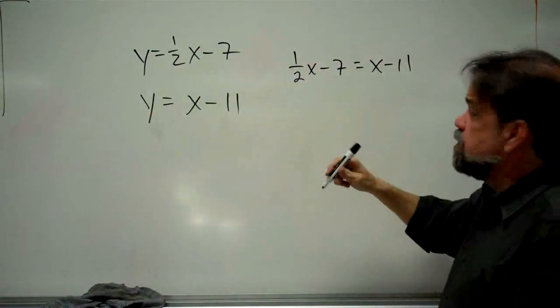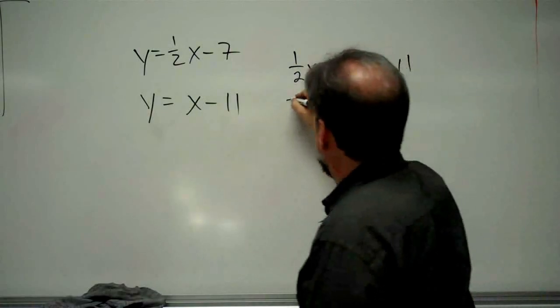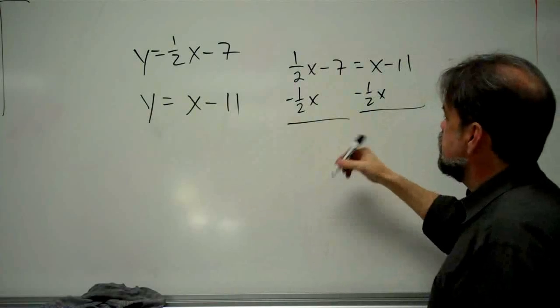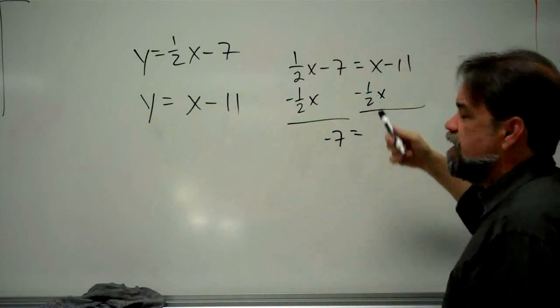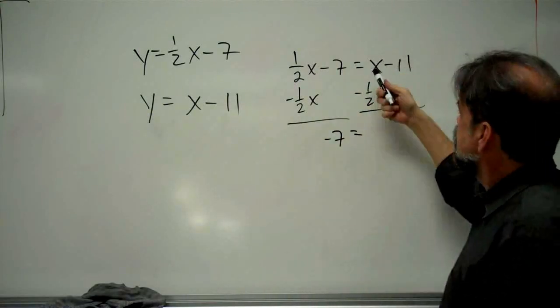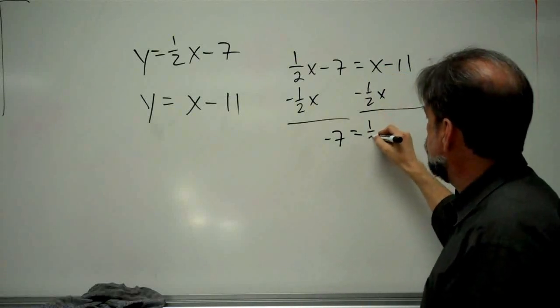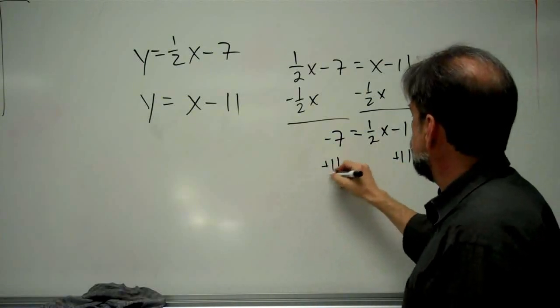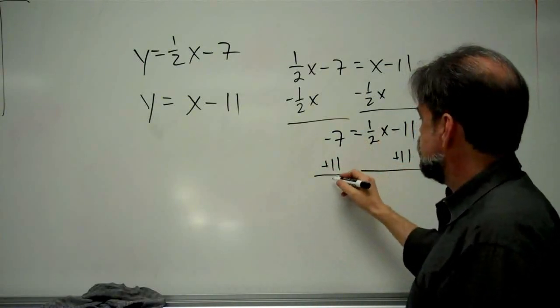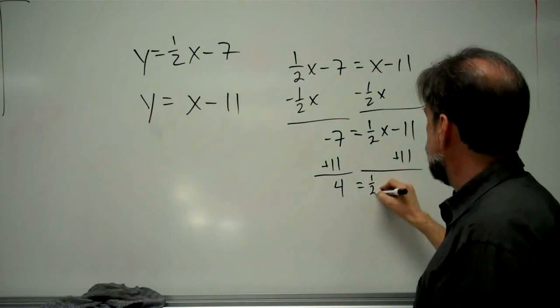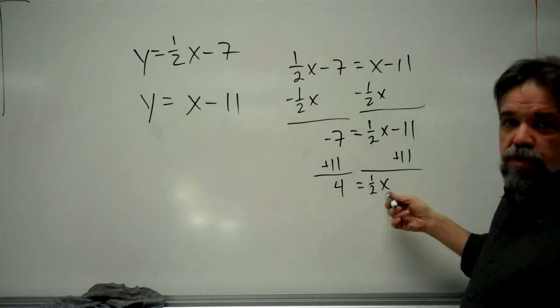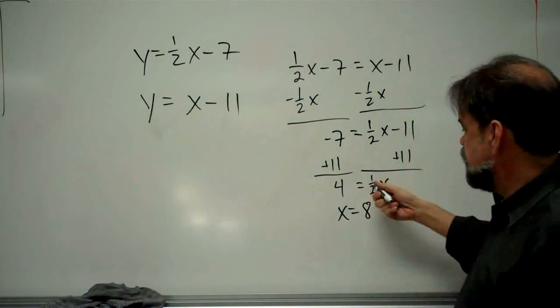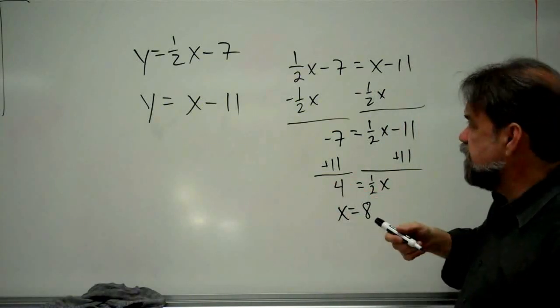Again, a lot of x's up there. Let's get rid of some of them. Let's subtract 1 half x from both sides. And I get, these cancel out, negative 7 equals x minus half of an x. That's like saying 1 minus 1 half. That's 1 half x minus 11. Now I'm going to add 11 to both sides. And I get negative 7 plus 11 is 4 equals 1 half x. So 1 half of what number equals 4? I believe x would be 8. Dividing by 1 half is the same thing as multiplying by 2. And so I get x equals 8.